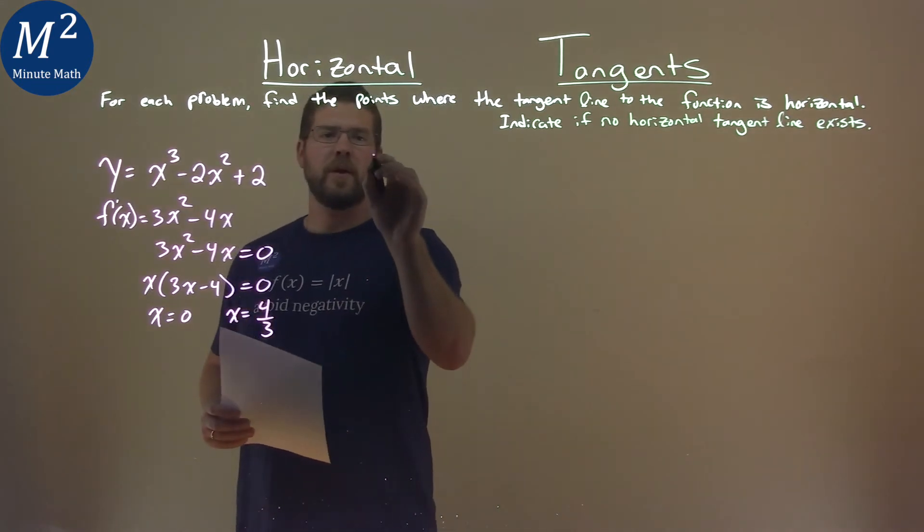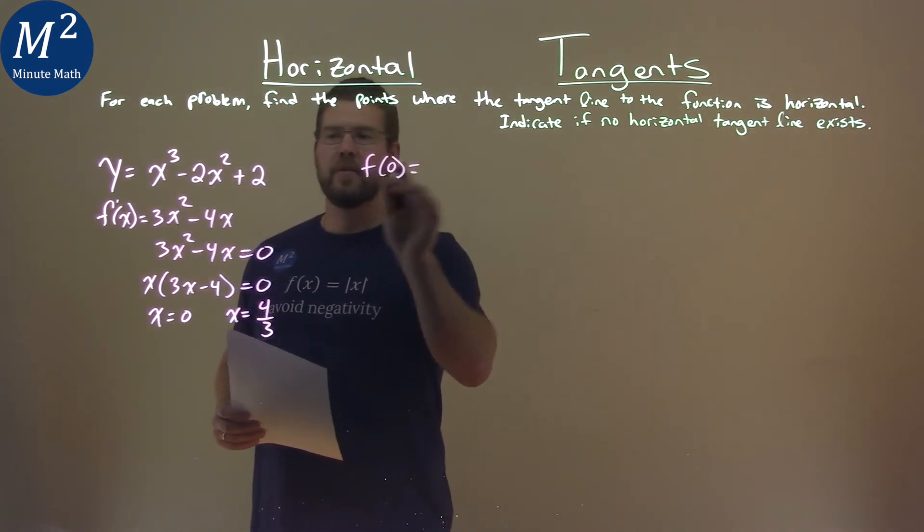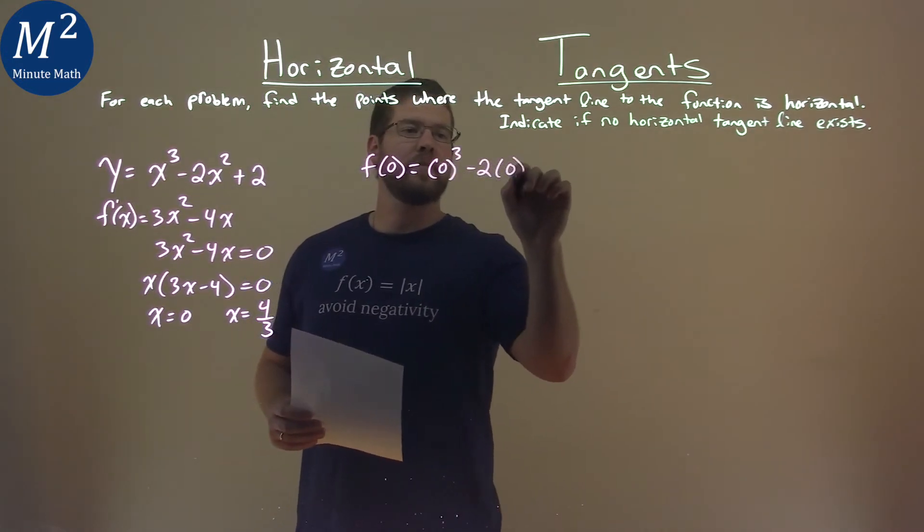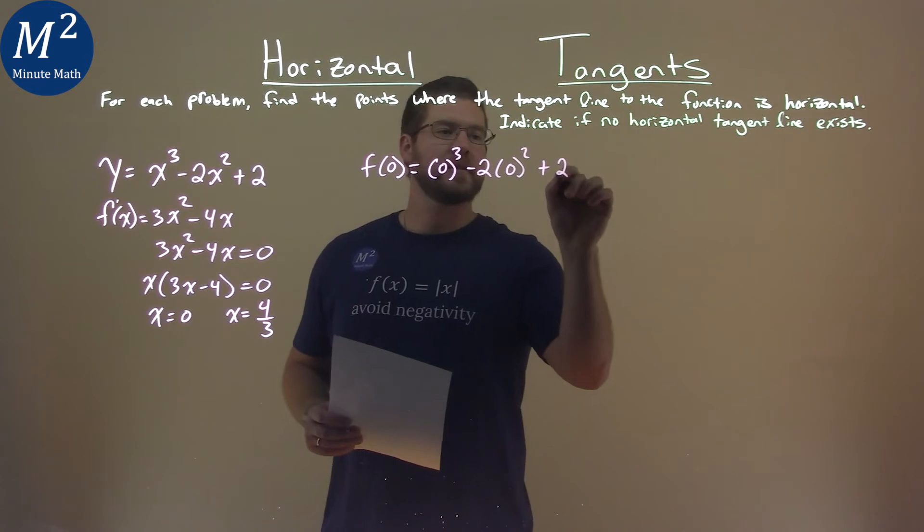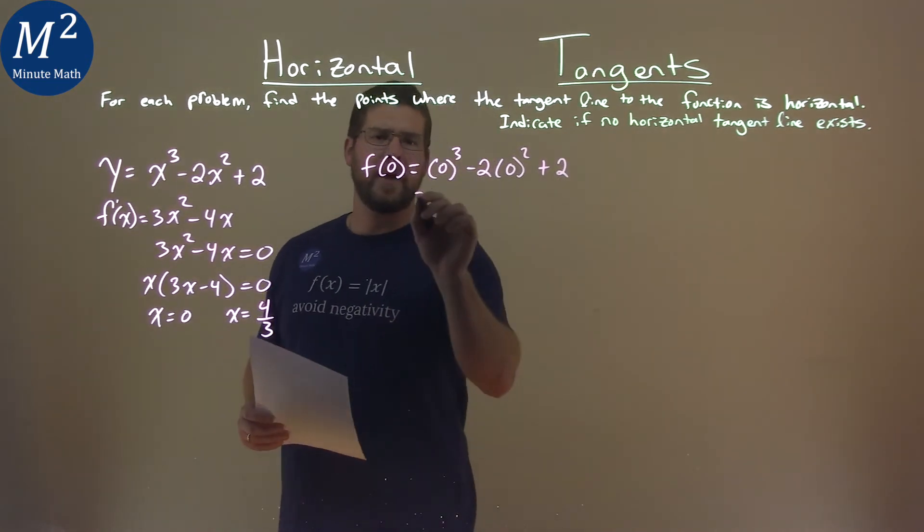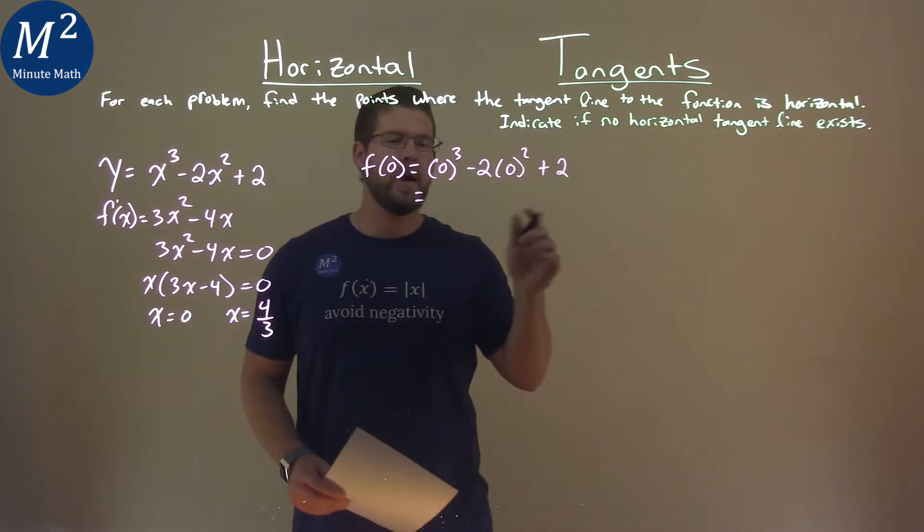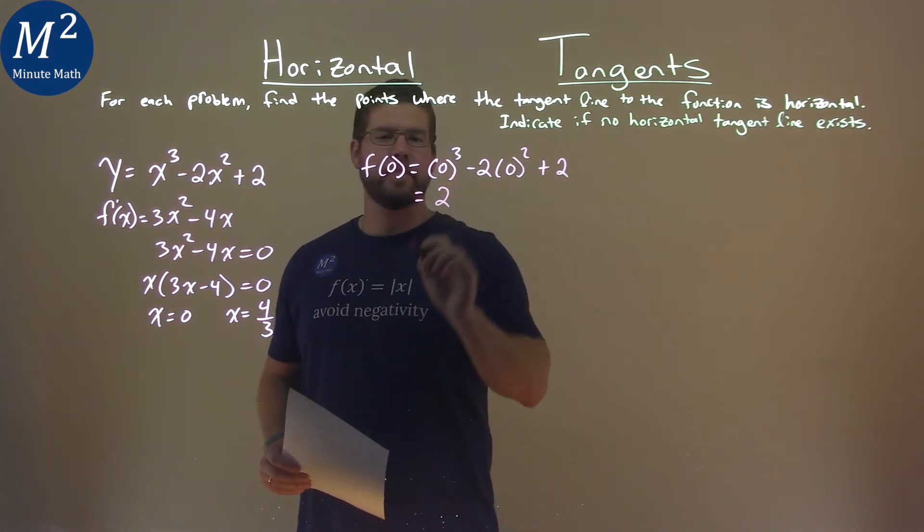So let's go with the first one. We have f of 0. 0 is going in for x here, and we have 0 to the third power minus 2 times 0 squared plus 2. Solving that, pretty easy, 0 to the third power is 0, 2 times 0 squared is 0. We just have a 2 left over. Pretty easy.